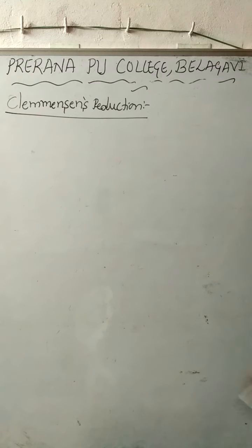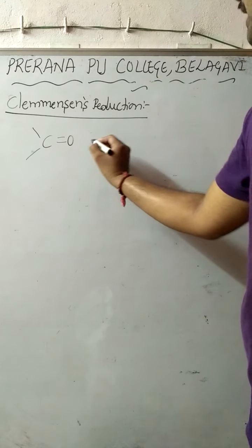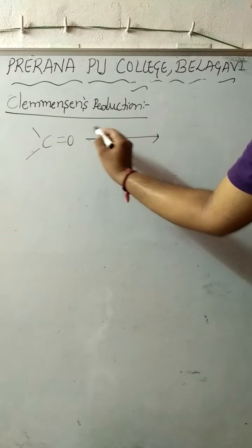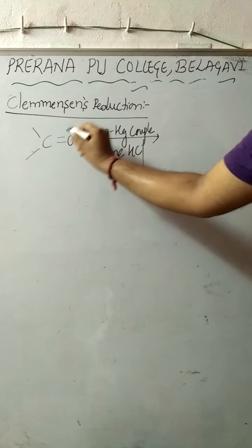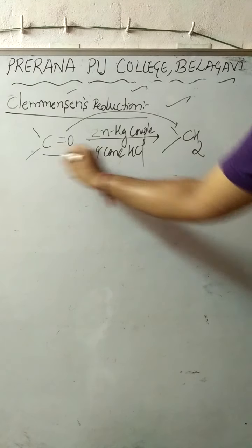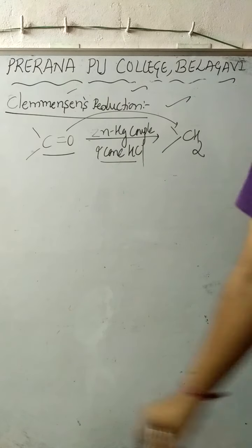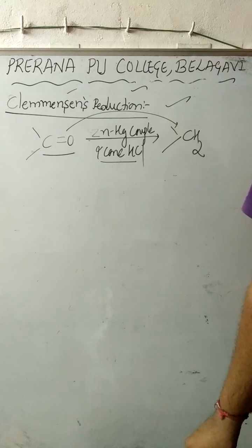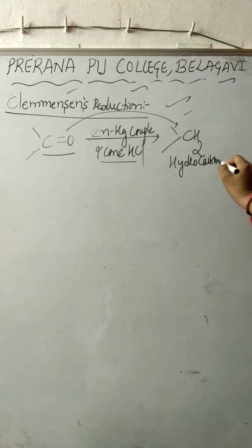Now let us discuss Clemmensen's reduction. Clemmensen's reduction states that when an aldehyde or a ketone containing a carbonyl carbon is subjected to reduction in the presence of a zinc-mercury couple and concentrated HCl, the C=O group gets converted into a CH2 group. In other words, hydrocarbons are obtained as the major product.